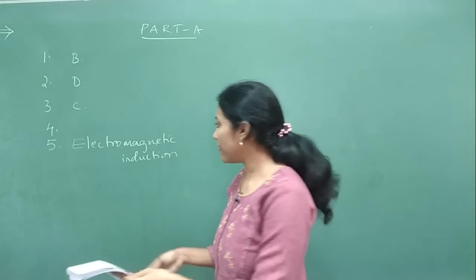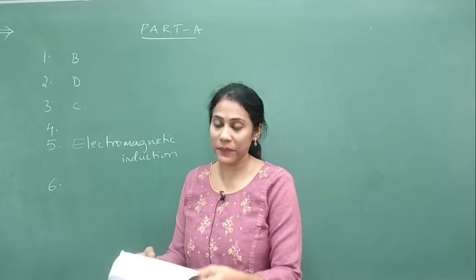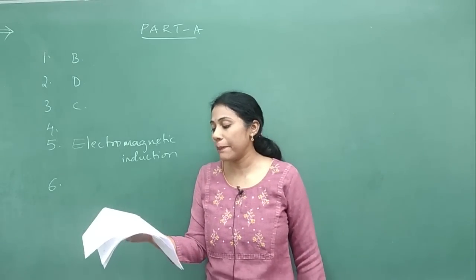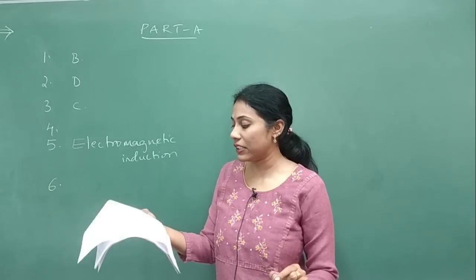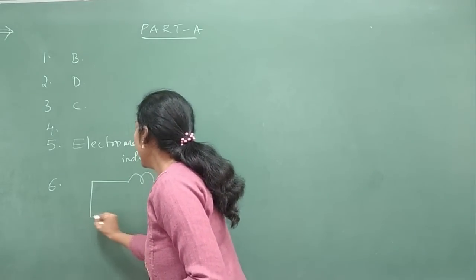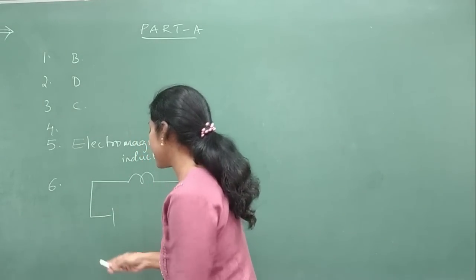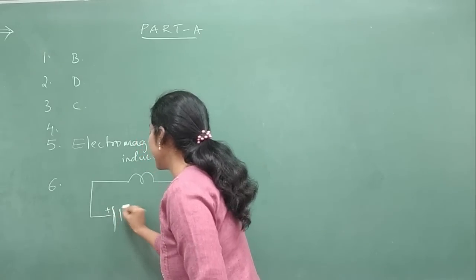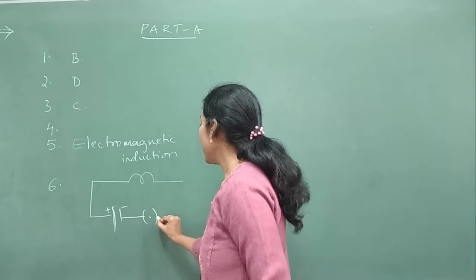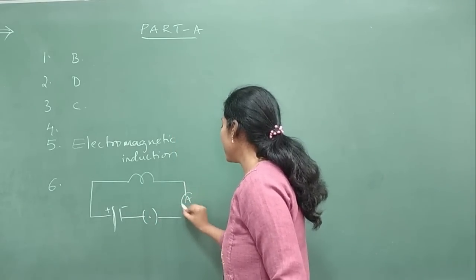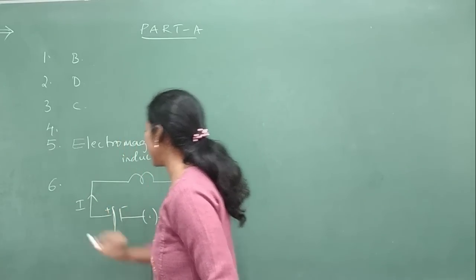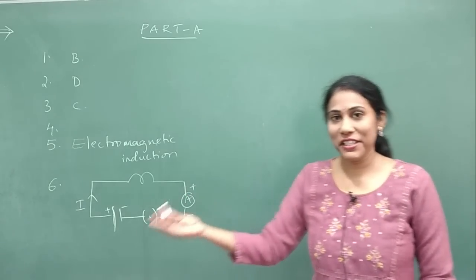Question number 6 is a diagram question from physics. Draw the schematic diagram of an electric circuit comprising a cell, electric bulb, ammeter, and plug key. It's a simple diagram. You show the cell with positive and negative terminals, a plug key, and an ammeter. The direction of current is always from positive to negative. This carries two marks.